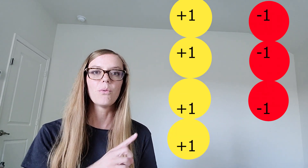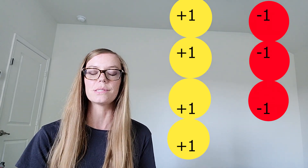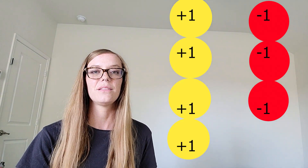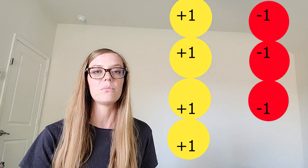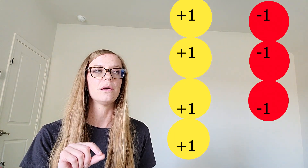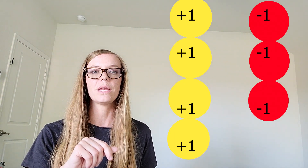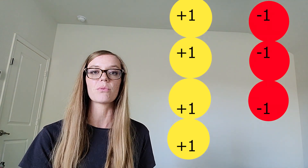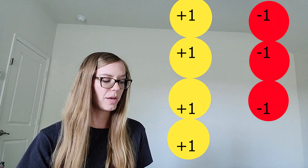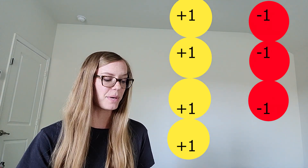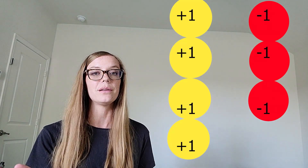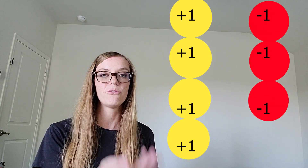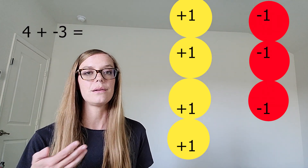Here's our next example. We have four protons and three electrons. So let's make our matches. This would be a really good thing to do at home too — if you have something that you can show two different colors on, or even making little plus-one cards and minus-one cards, this would be a really good thing to practice. It looks like I've got some matches, but I've got a proton that doesn't have a match. So what do you think is the total when I have this four plus a negative three?